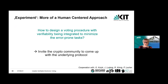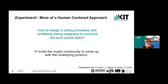Finally, I want to talk about an experiment we are currently running in cooperation with Oxana, Jonas, Vito, and Philip. What I've shown you so far was a voting protocol with security proofs, and we tried to make the interfaces as usable as possible. But why not try it the other way around — taking a more human-centered approach to see how we can design a voting procedure implementing cast-as-intended verifiability with ideally no error-prone tasks, and then ask the crypto community to come up with an underlying protocol.